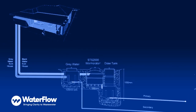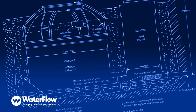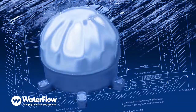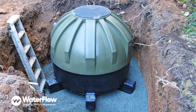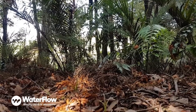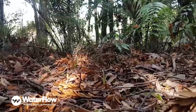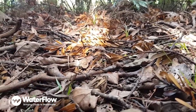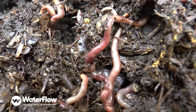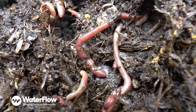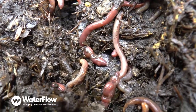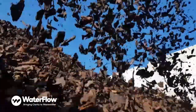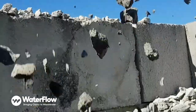Treatment of the black water commences in a purpose-designed unit known as the Wormerator, which is an enclosed ecosystem simulating the forest floor where the solids are separated from the liquid and treated through vermiculture and other natural processes and filter medias, which do not require any power source.